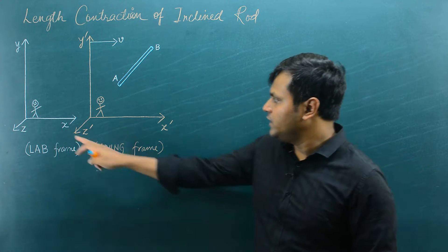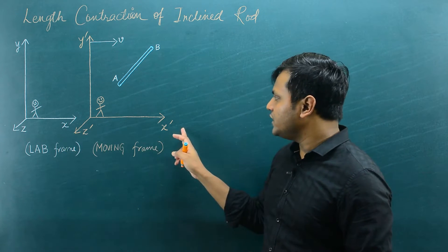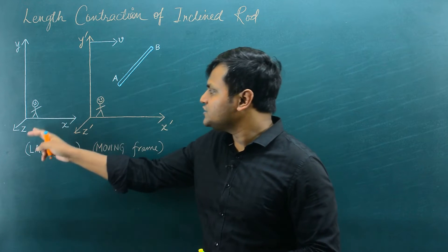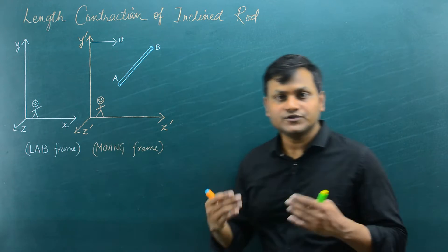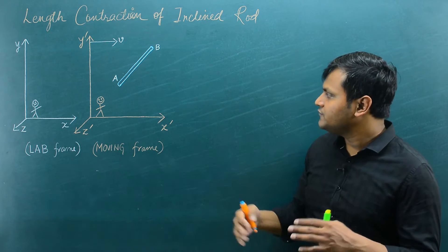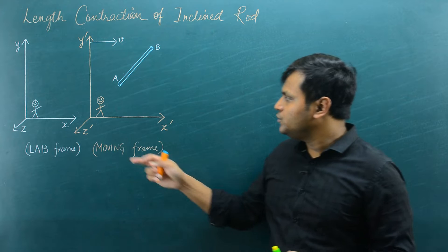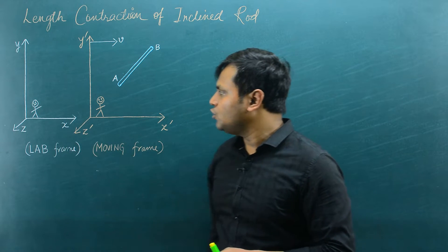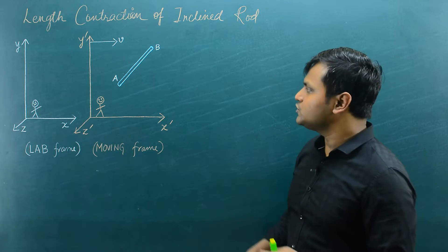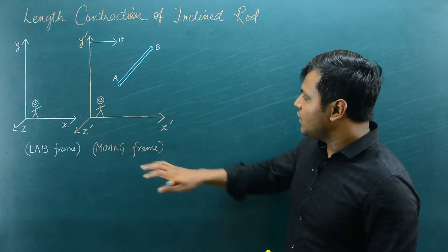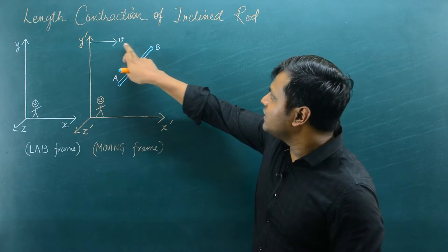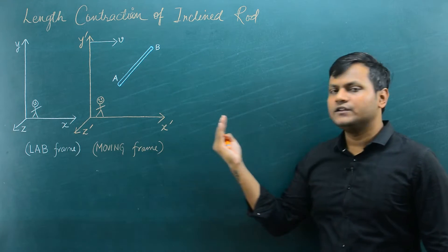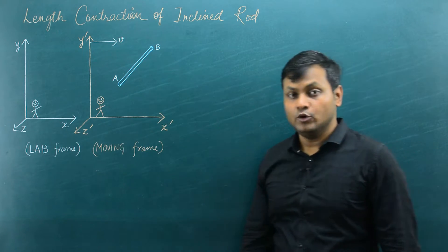For the sake of simplicity, I am assuming x is parallel to x dash, y parallel to y dash, and z parallel to z dash. Also, I am assuming that at time t equals 0, both origins of these coordinate reference frames coincide. But because the moving frame is at a particular velocity, it moves further and further away as time goes on.